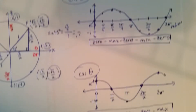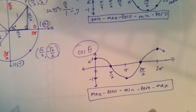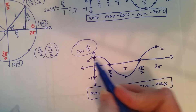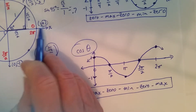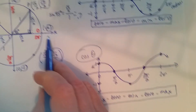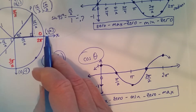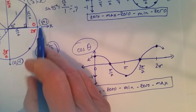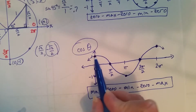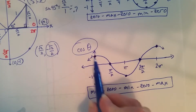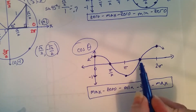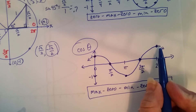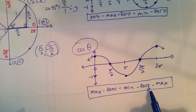Now your cosine curve, on the other hand, starts at 1. The cosine is the x values, and the cosine starts at 1. So the cosine five-point pattern is: max, zero, min, zero, max.